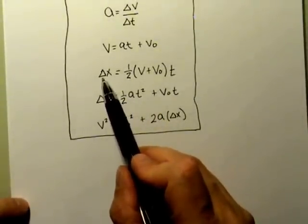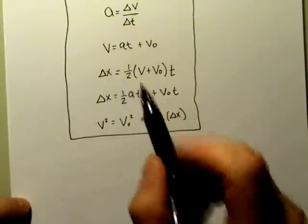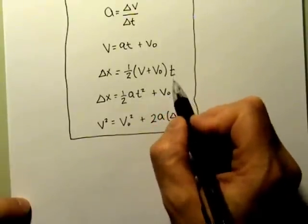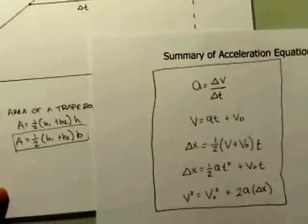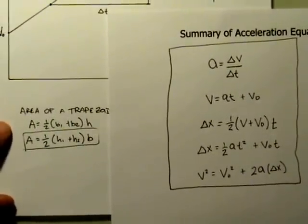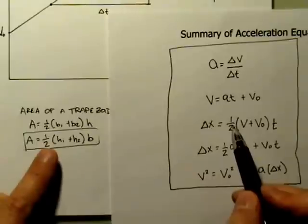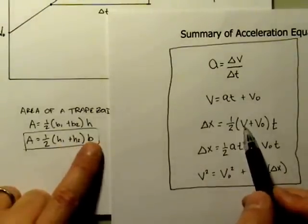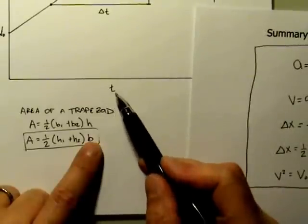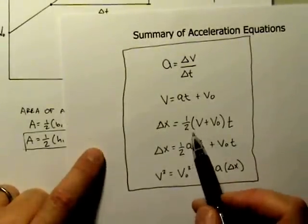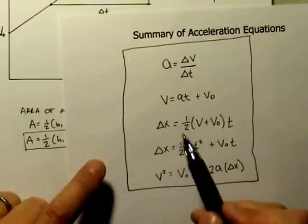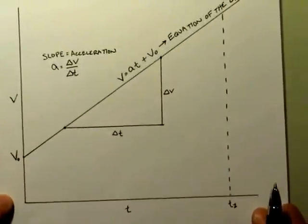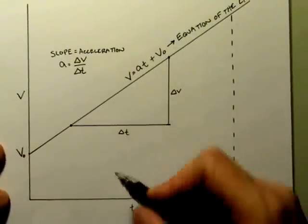The displacement — or change in position — equals ½(V₀ + V) × t. Looking at the similarities: the one-half is there, the two heights are V and V₀, and the base is the time. This equation looks just like the formula for the area of a trapezoid. Therefore, we can use the area of the trapezoid to calculate displacement, and recognize that this equation is represented on the graph.